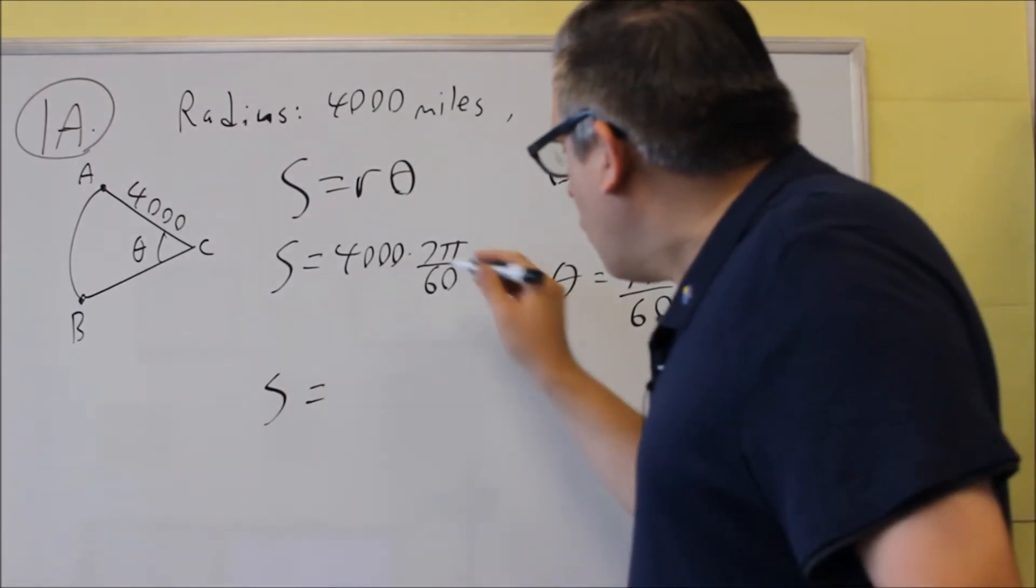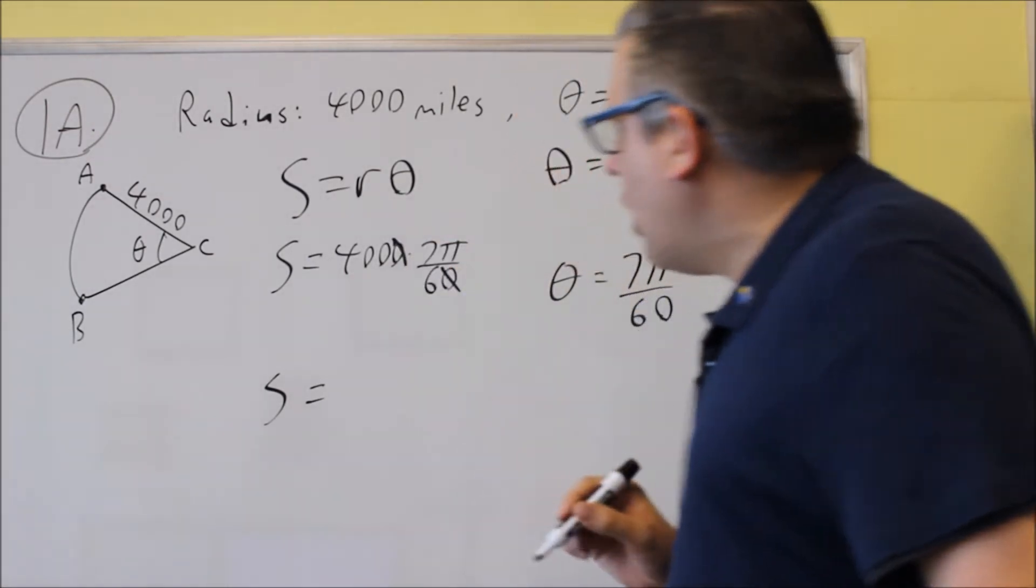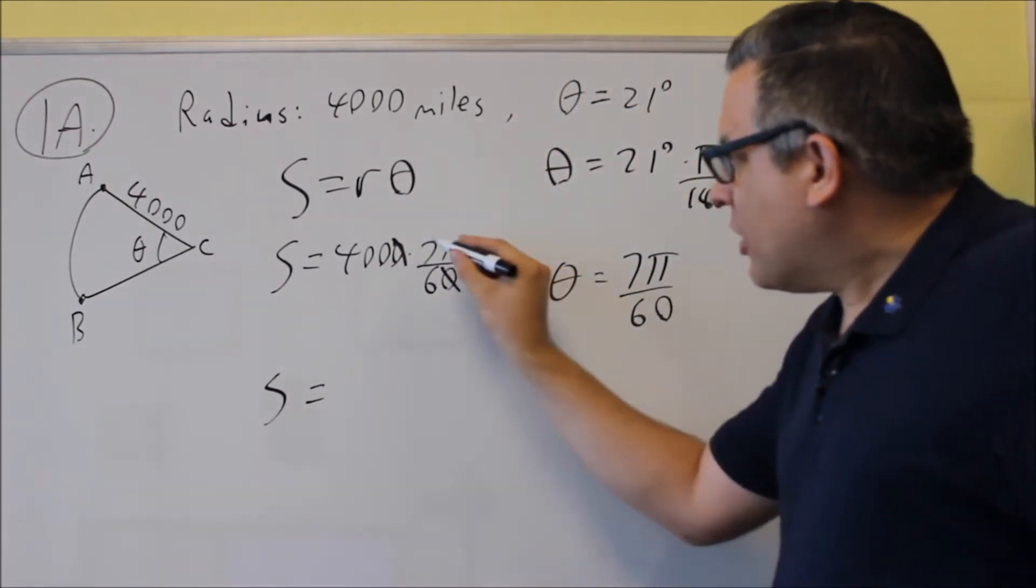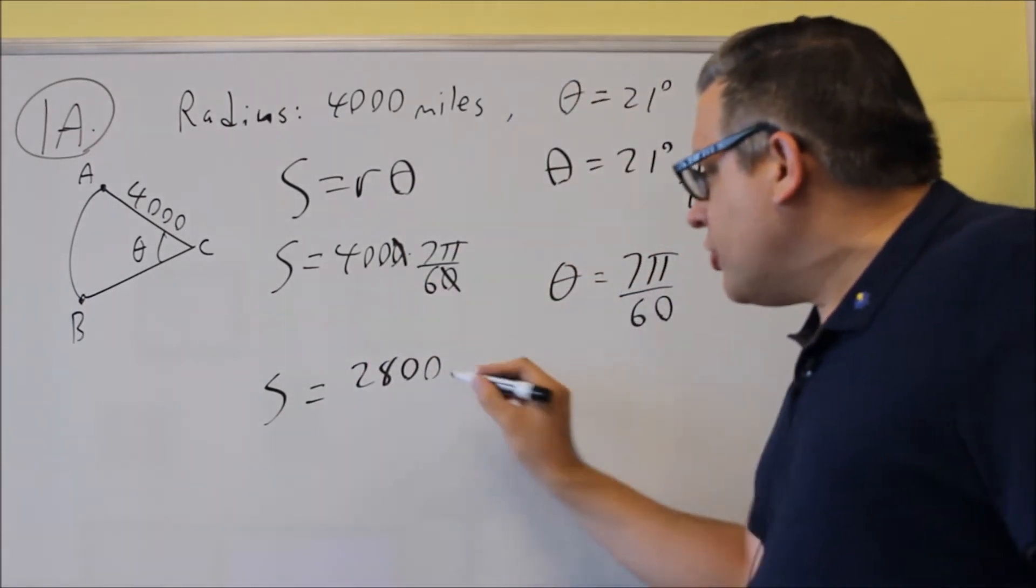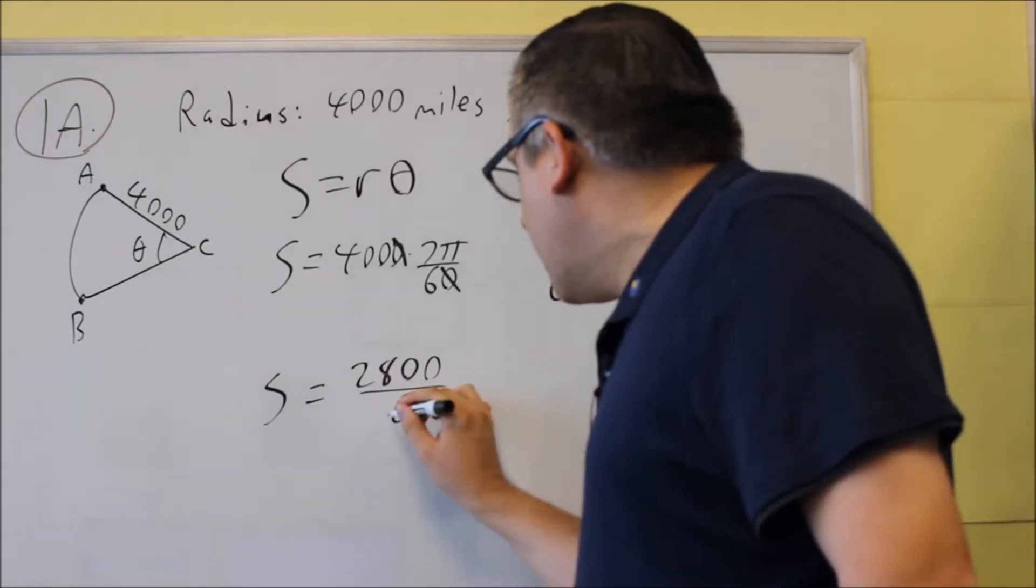And so one of the zeros will cancel out there. We get 7 times 400. We get 28 with two zeros, and we're going to divide that by 6.